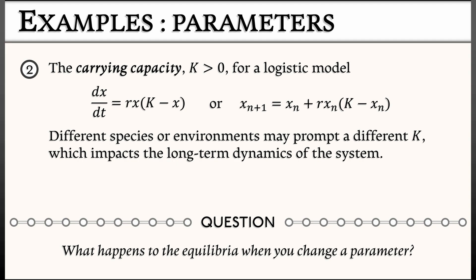Now, you might ask, what's that r in there? That's something like a reproduction rate. That is also a parameter. This is an example of a system with two parameters. Again, the interesting question is, what happens to the equilibria when you change that parameter?